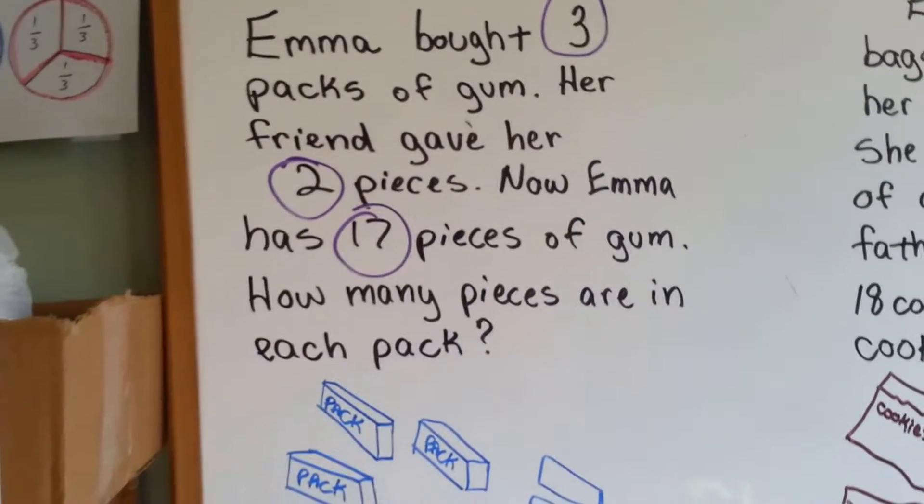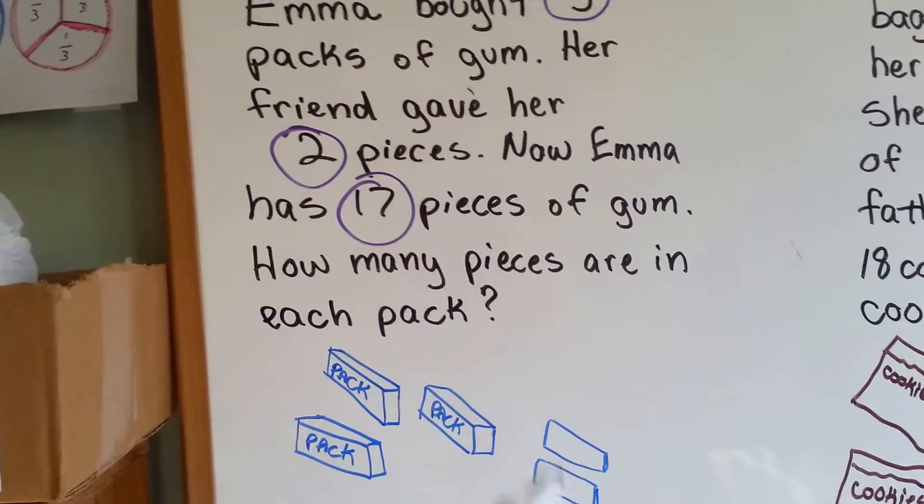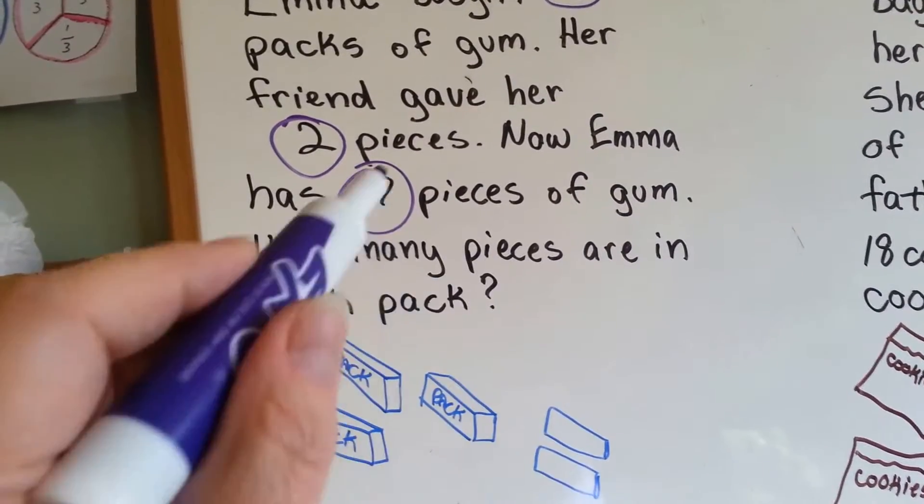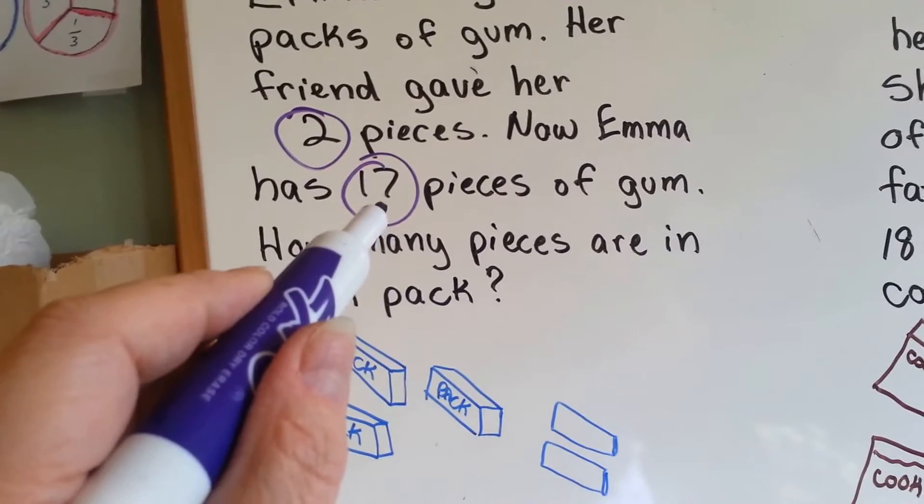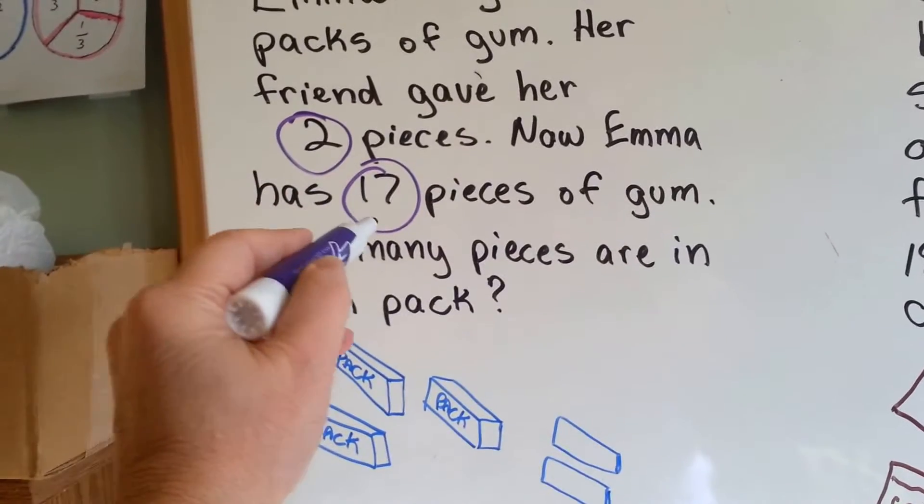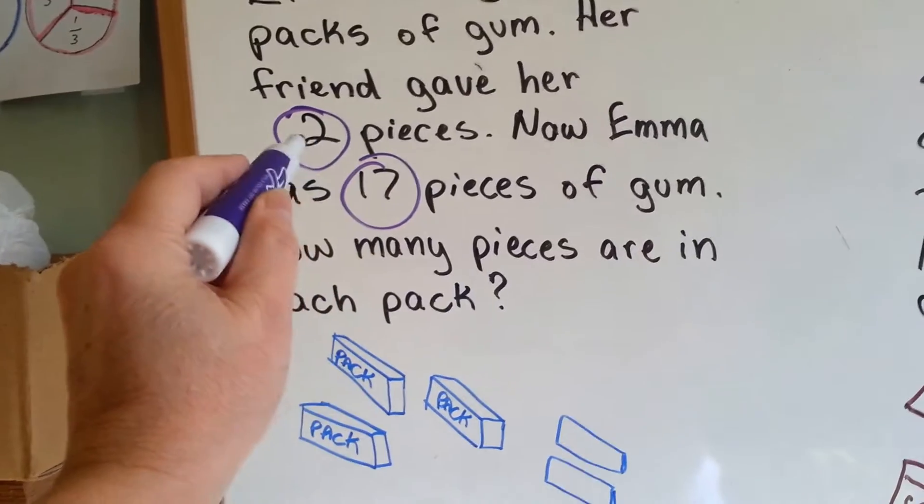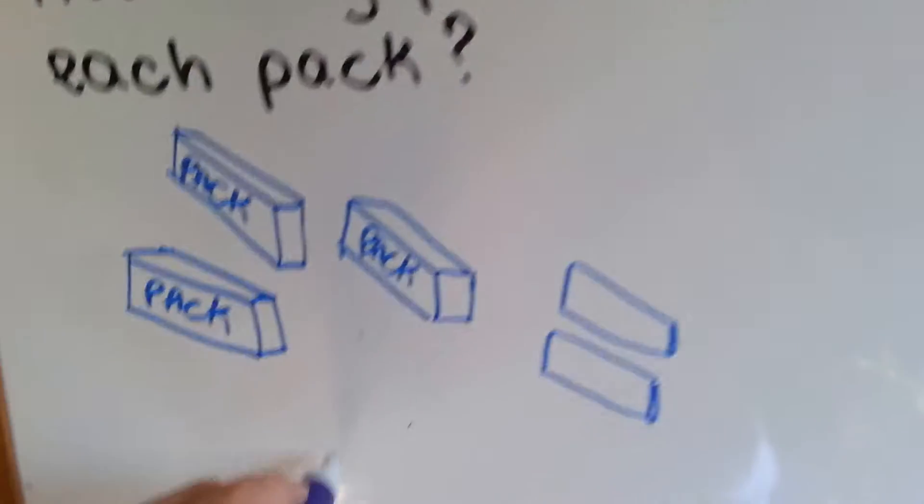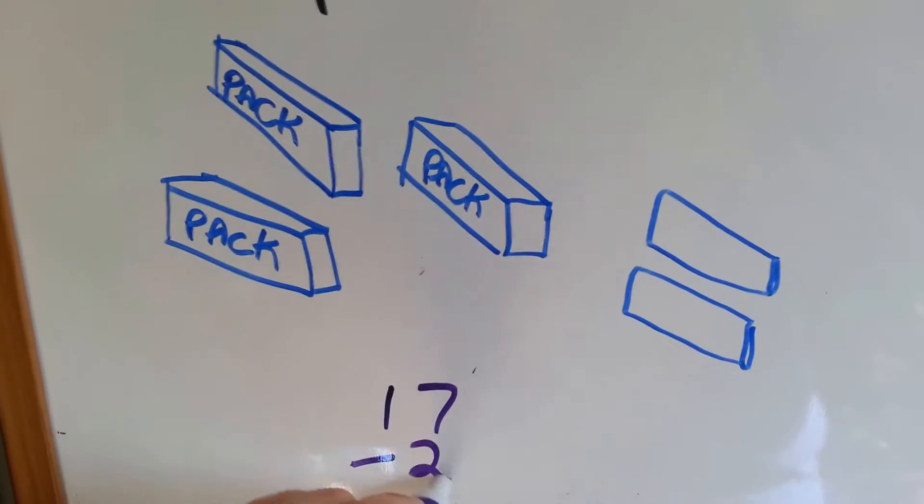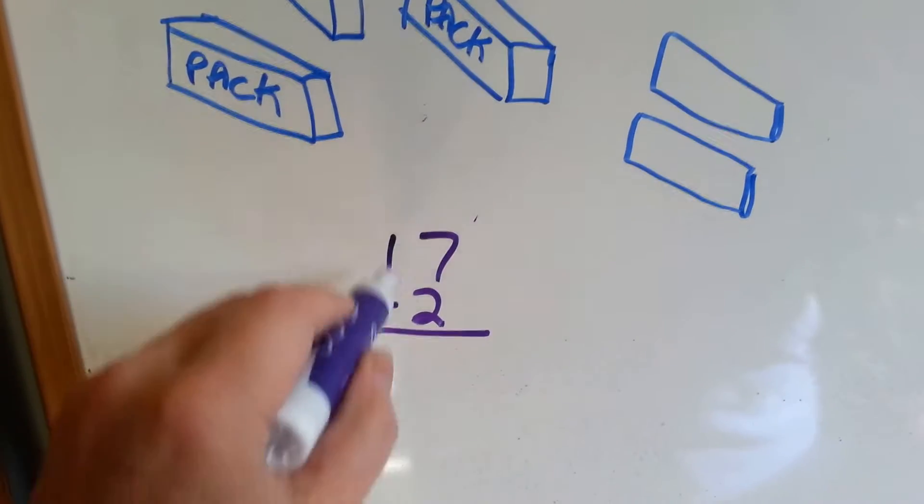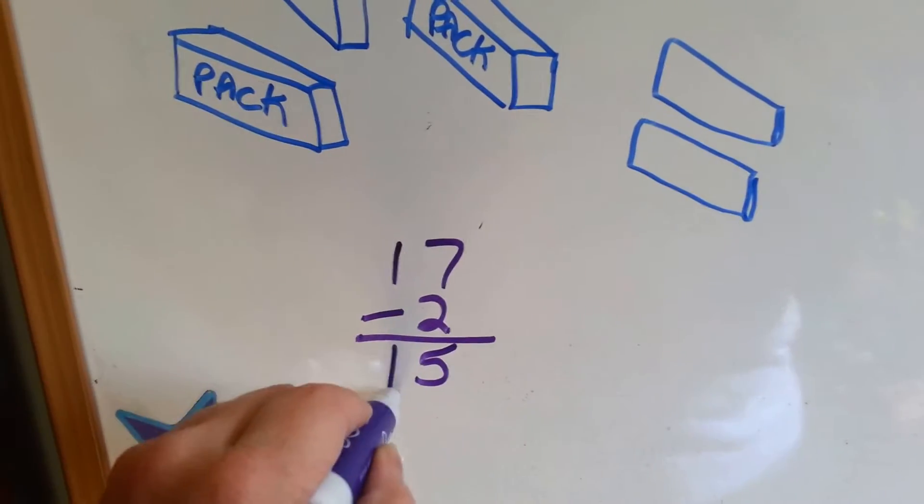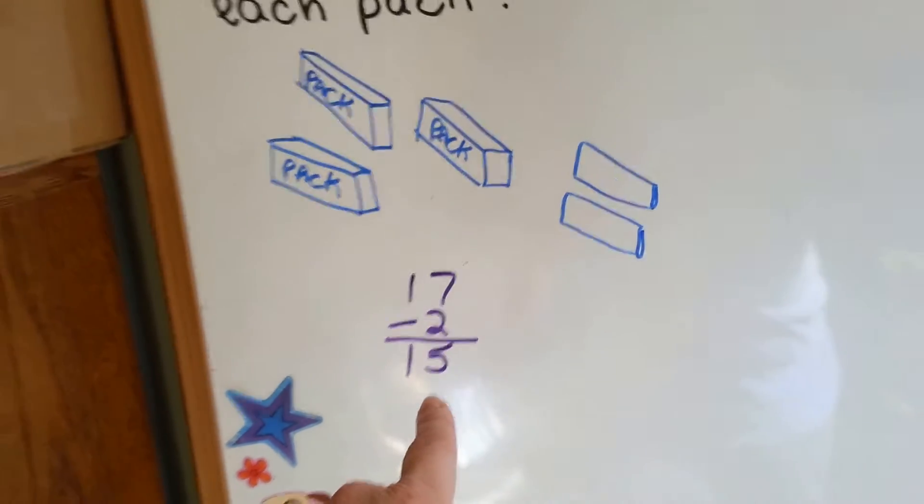So, we know we've got three packs of gum, and we know her friend gave her two pieces, and now she has 17 pieces. What we need to do is we need to take the 17 and subtract the 2. 7 take away 2 is 5, and drop the 1. Now we have 15.